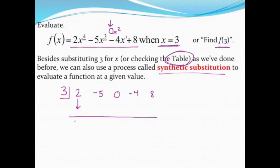Drop that first number straight below the line. So 2 drops straight down. Multiply what's below the line by what's in the box. 2 times 3 gets you a 6, and then add the numbers in the column together. So negative 5 plus 6 is 1, and then repeat. So 1 times 3 is 3. Add those values together, and repeat. 3 times 3 is 9. Add those values together. Repeat. 5 times 3 is 15, and then 8 plus 15 is 23.